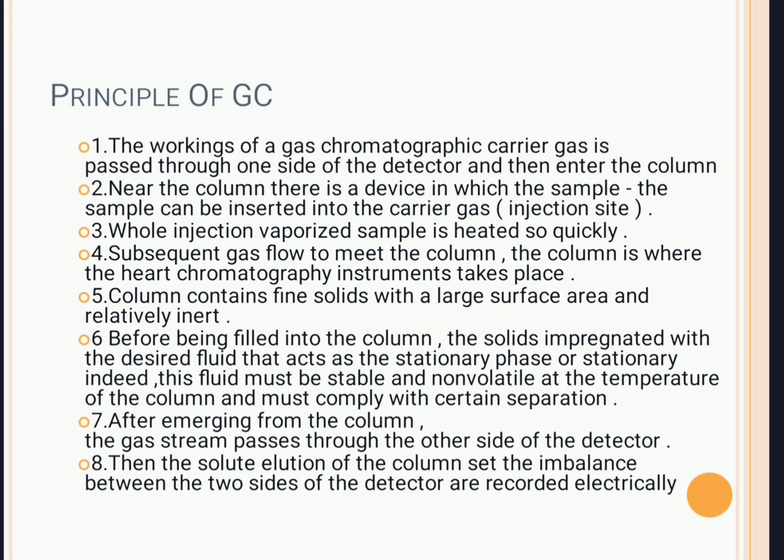Here the detailed principle is given. The carrier gas is passed through one side of the detector and then enters the column. Near the column there is a device where the sample is inserted into the carrier gas. The injected vaporized sample is heated quickly because the oven temperature is higher. The column is where the actual chromatographic separation takes place. The column contains fine solid with a large surface area and is relatively inert.